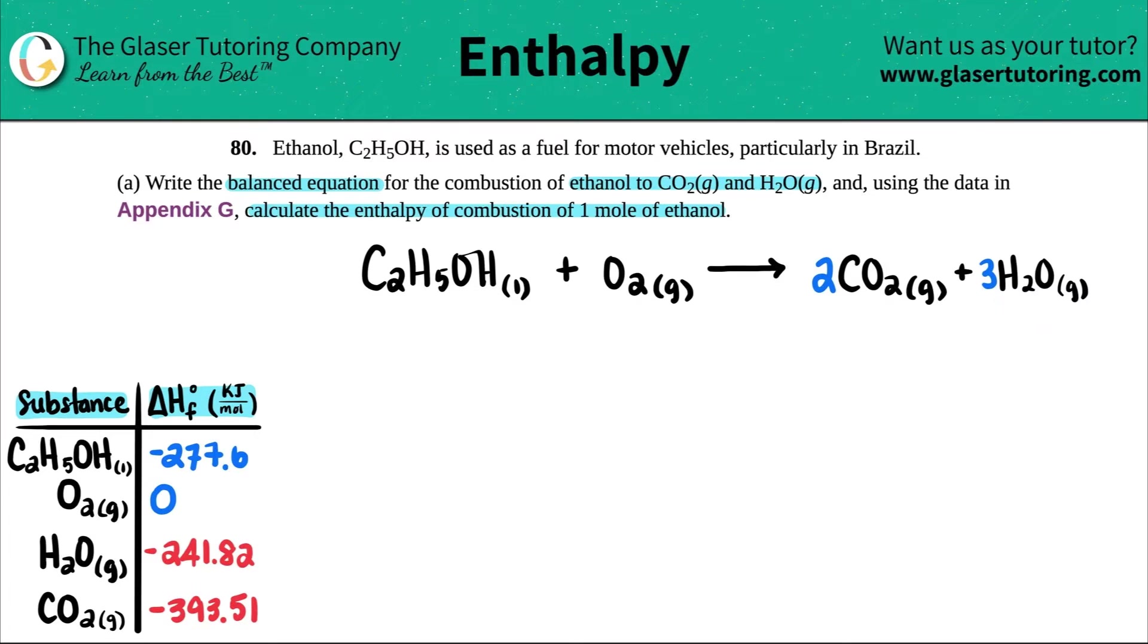Thank goodness. No fractions. I'm just going to put a three here. Okay. So first part is done. Write the balanced equation for the combustion. Done. Now we just have to calculate the enthalpy of combustion. So we have to find the delta H of the reaction.